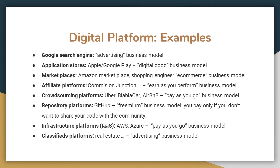Crowdsourcing platforms like Uber and Airbnb use a pay-as-you-go business model. Repository platforms like GitHub use a free business model — you pay only if you don't want to share your code with the community. Infrastructure platforms such as AWS and Azure use a pay-as-you-use business model. Classified platforms, such as real estate platforms, use an advertising business model.